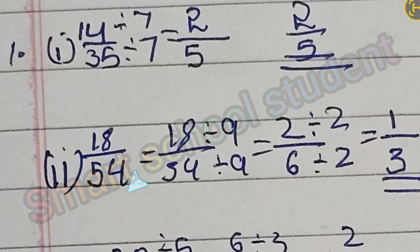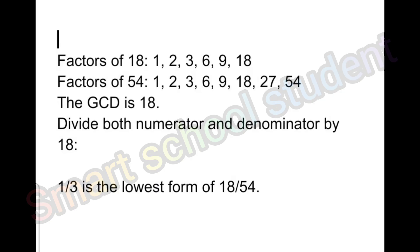Second question is 18 divided by 54. Factors of 18 are 1, 2, 3, 6, 9, 18. Factors of 54 are 1, 2, 3, 6, 9, 18, 27, 54. The GCD is 18. Divide numerator and denominator by 18, we will get the answer as 1 by 3.